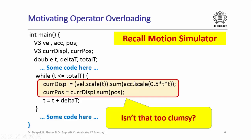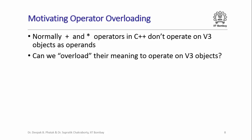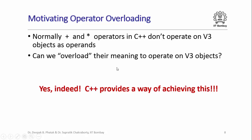Isn't this too clumsy? We wanted to do simple vector scaling and addition but look at what we have ended up doing. The question is: can we write this in C++ in a cleaner way, scaling and adding things exactly as vector operations? The problem is that the plus and star operators in C++ do not normally operate on V3 objects. So the question is: can we overload the meaning of plus and star to operate on V3 objects? The answer is a resounding yes.